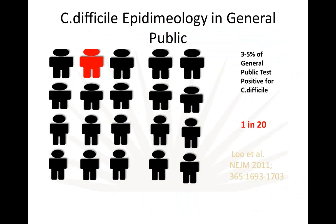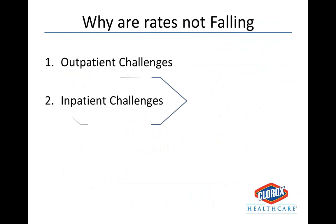A paper by Vivian Liu published in the New England Journal of Medicine in 2011 showed that in a typical random sample, 3 to 5% of the general population test positive for C. difficile — roughly one in 20 people. So, many patients coming into a healthcare facility may already have C. difficile either symptomatically or asymptomatically. Let's now talk about the inpatient challenges.